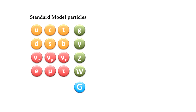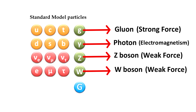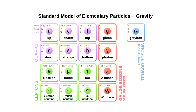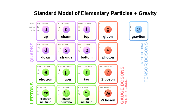The gauge bosons are the photons that carry the electromagnetic interaction, gluons which are responsible for the strong force, and the W and Z bosons for the weak force. The graviton would also be a boson responsible for gravity. Real versions of these bosons have been observed, with the exception of the graviton. Since there is no quantum theory of gravity yet, let's first look at the other three forces that do have a quantum theory to support them.